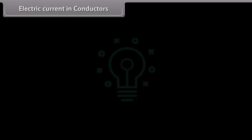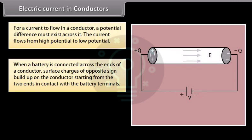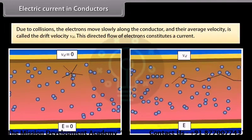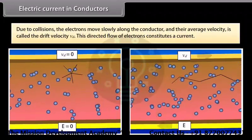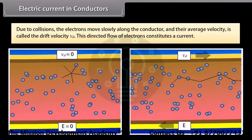For a current to flow in a conductor, a potential difference must exist across it. The current flows from high potential to low potential. When a battery is connected across the ends of a conductor, surface charges of opposite sign build up on the conductor, starting from the two ends in contact with the battery terminals. These surface charges produce an electric field, causing electrons to move opposite to the field direction. Due to collisions, the electrons move slowly along the conductor, and their average velocity is called the drift velocity vd. This directed flow of electrons constitutes a current.